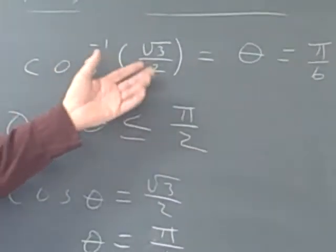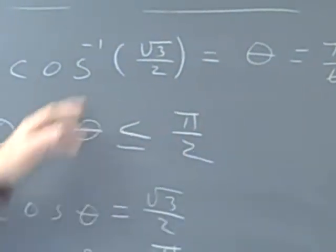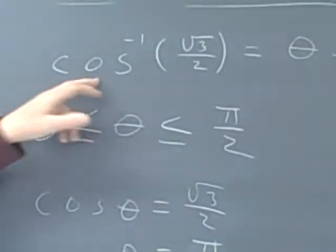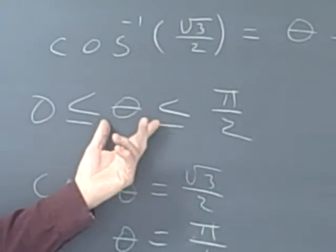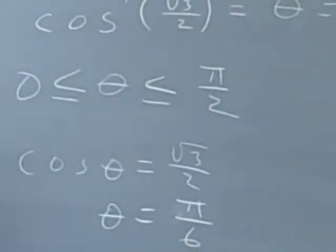So what did we do? The first thing we do is we said it's an angle. That's what an inverse function is. We'll call it theta. If the argument is positive inside the inverse function, then it's automatically an angle in the first quadrant. And we also know that cosine of theta will equal the argument.